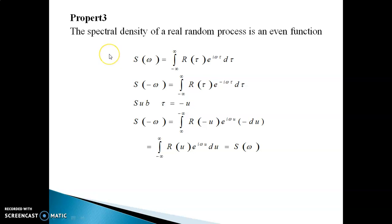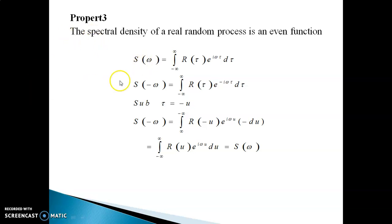Property 3: the spectral density of a real random process is an even function. We have already shown in the previous lecture that the autocorrelation function is an even function of τ. Now I am going to show that the spectral density S(ω) is an even function — that is, I have to prove that S(ω) = S(−ω).